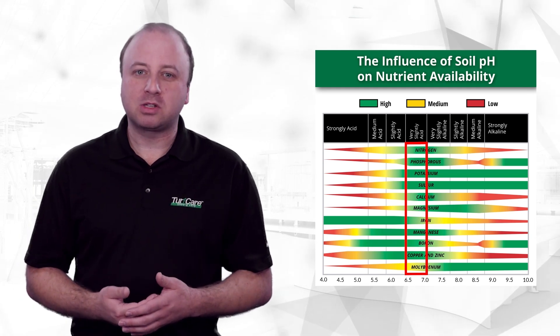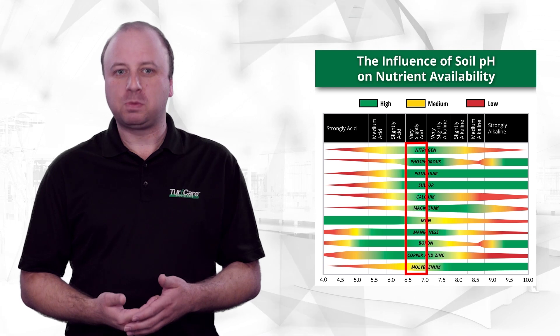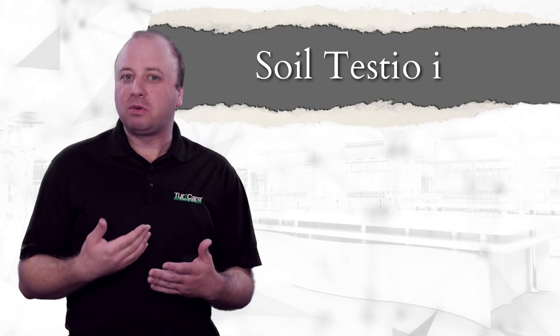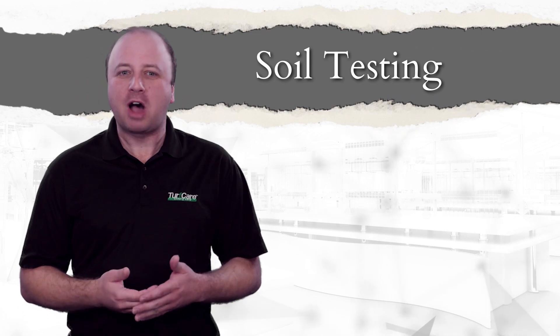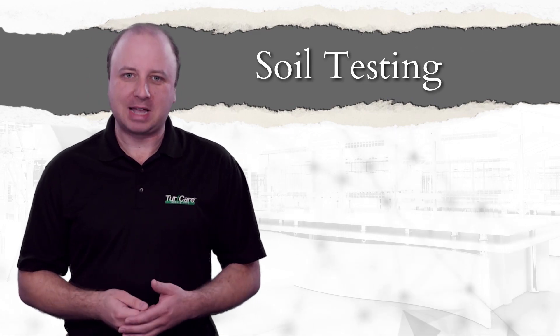Not surprisingly, most cool and warm season turf grasses perform best when the soil pH is between 6.5 and 7. In reality, almost no one will have an untouched, perfectly ideal soil on their property. Most soils could stand to benefit from at least a few minor adjustments, and the only way to know exactly what your soil needs in order to optimize growing conditions is to perform a soil test.